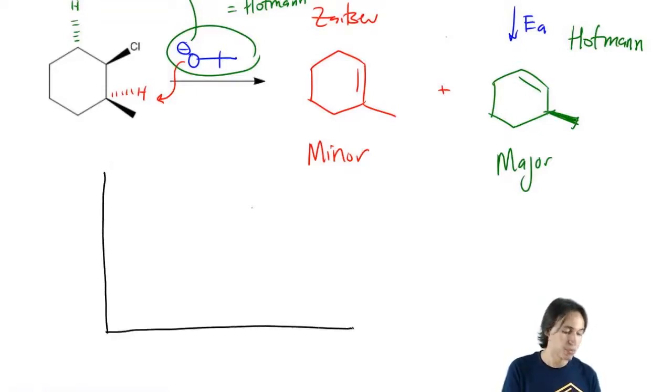Remember you have an energy diagram where you have spontaneity here and a reaction coordinate here. At the end I have a double bond, and at the beginning I have my alkyl halide plus the nucleophile.